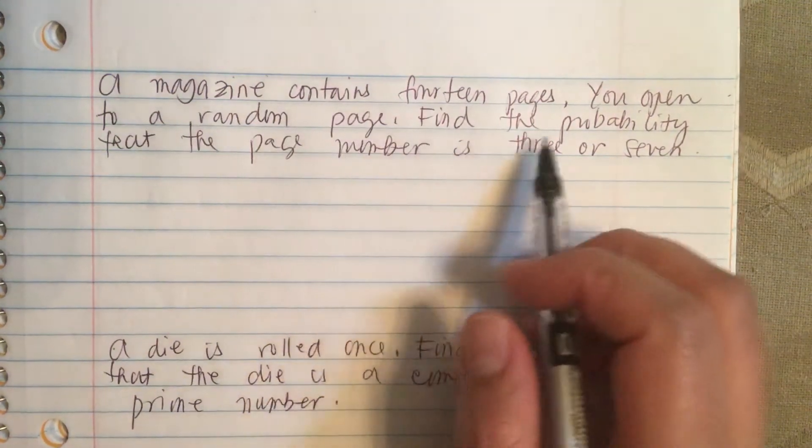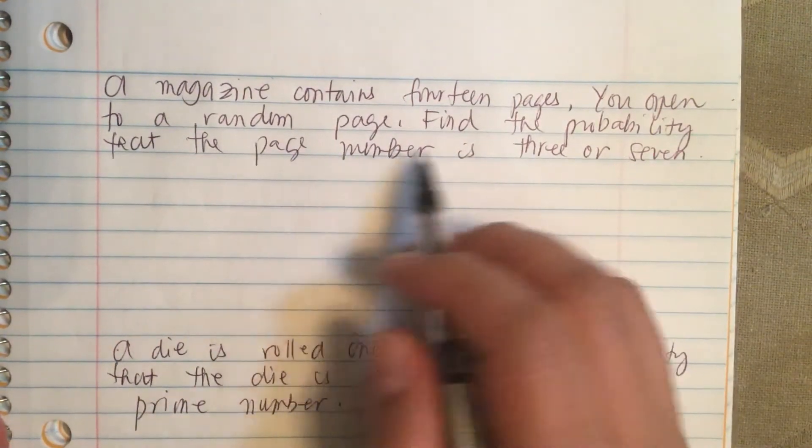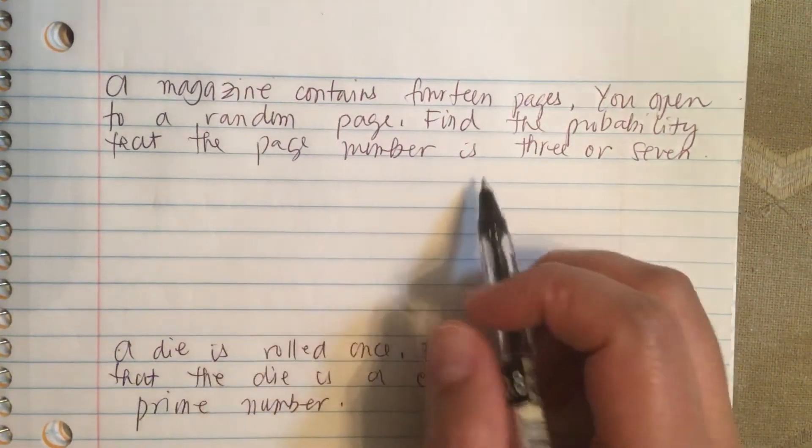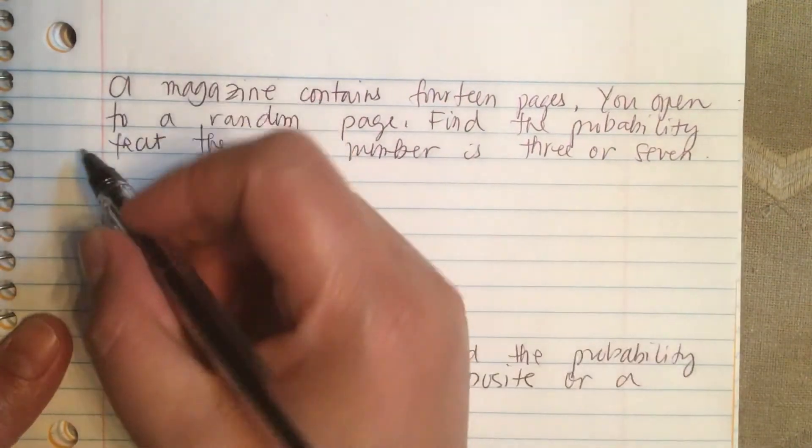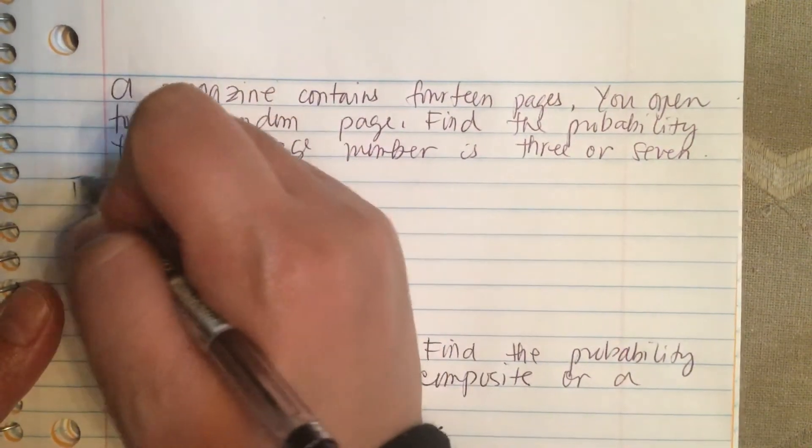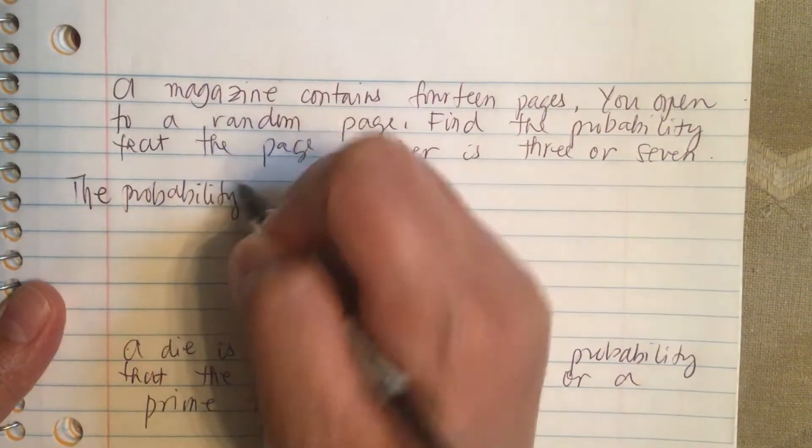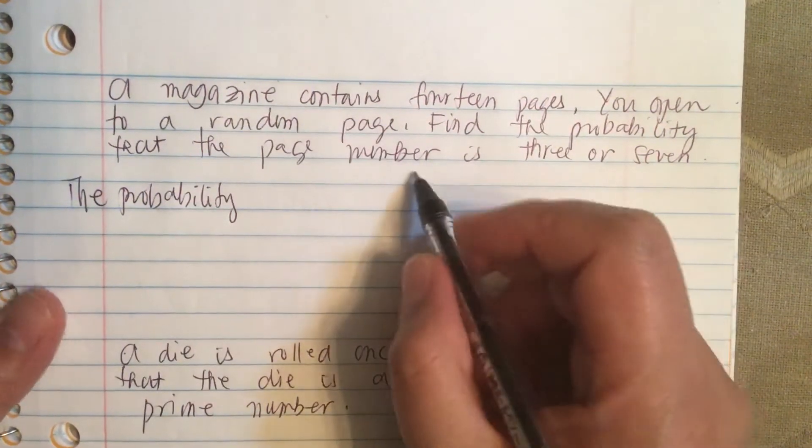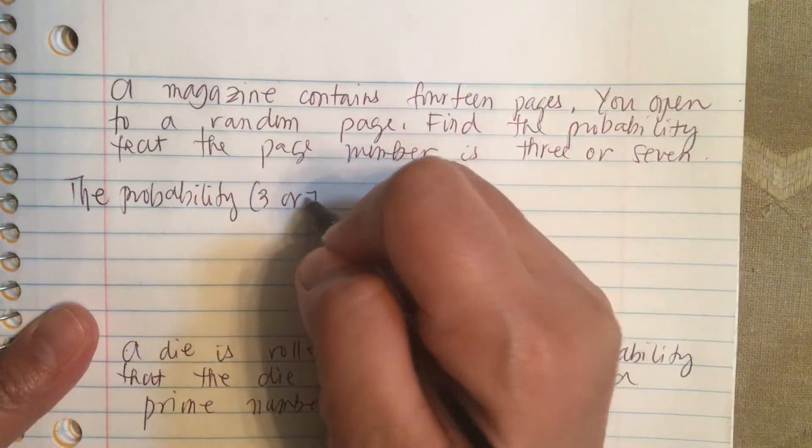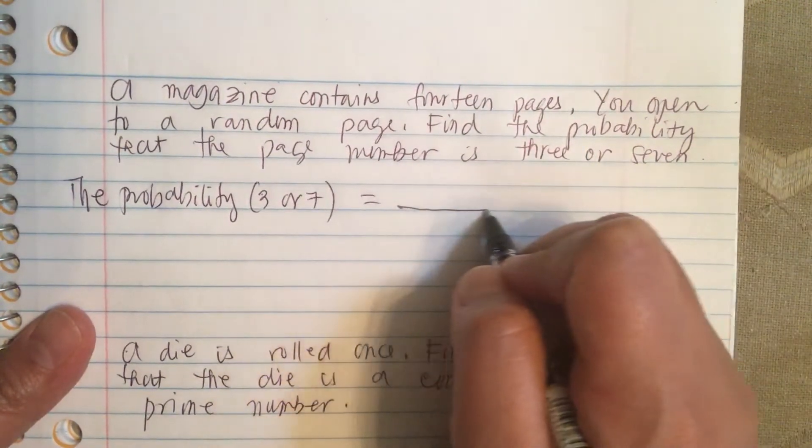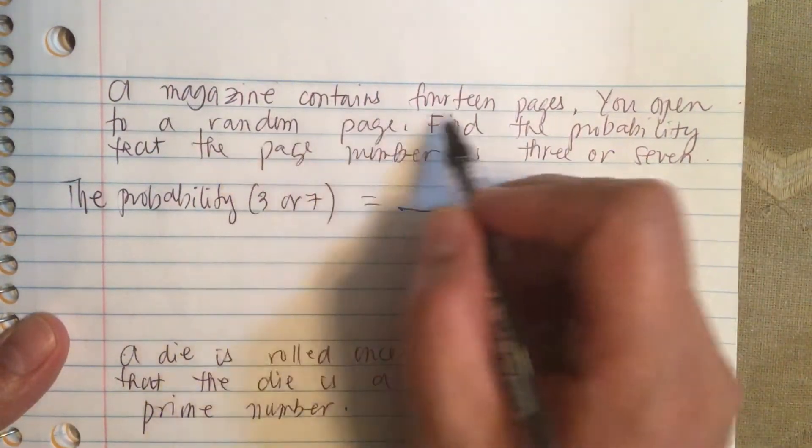A magazine contains 14 pages. You open to a random page and find the probability that the page number is a three or seven. So the probability of a page that is number three or seven is equal to... the bottom gonna be the number of total cases which is 14.